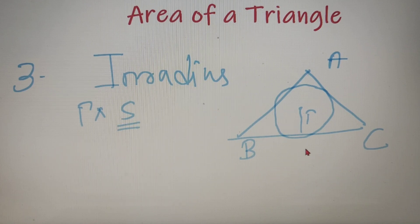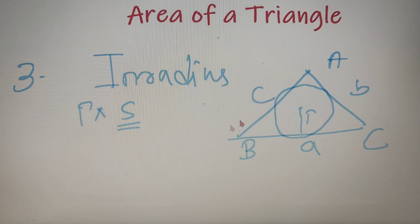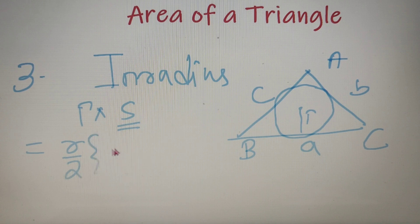So if the lengths of the sides are A, B and C respectively, then according to the inradius formula, the area of the triangle is r divided by 2 into (A plus B plus C).